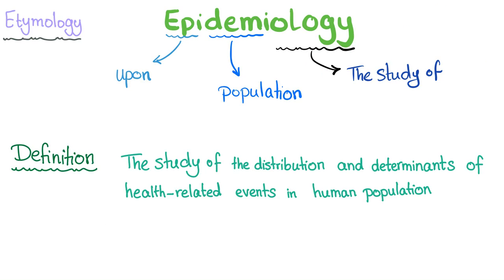When we discuss any topic for the first time, first we get the different roots of the word. This is called etymology — not to be confused with entomology, which is the study of insects. Ology means the study of. Demos means population. Epi means upon. So, the study based upon the population.